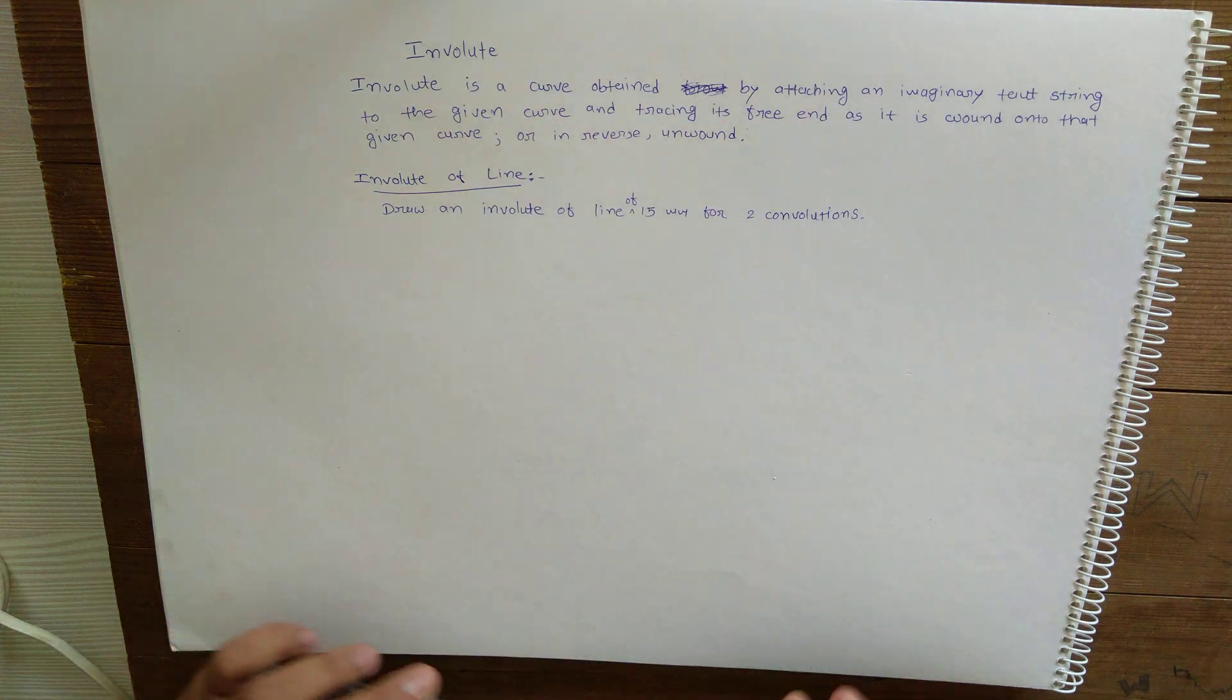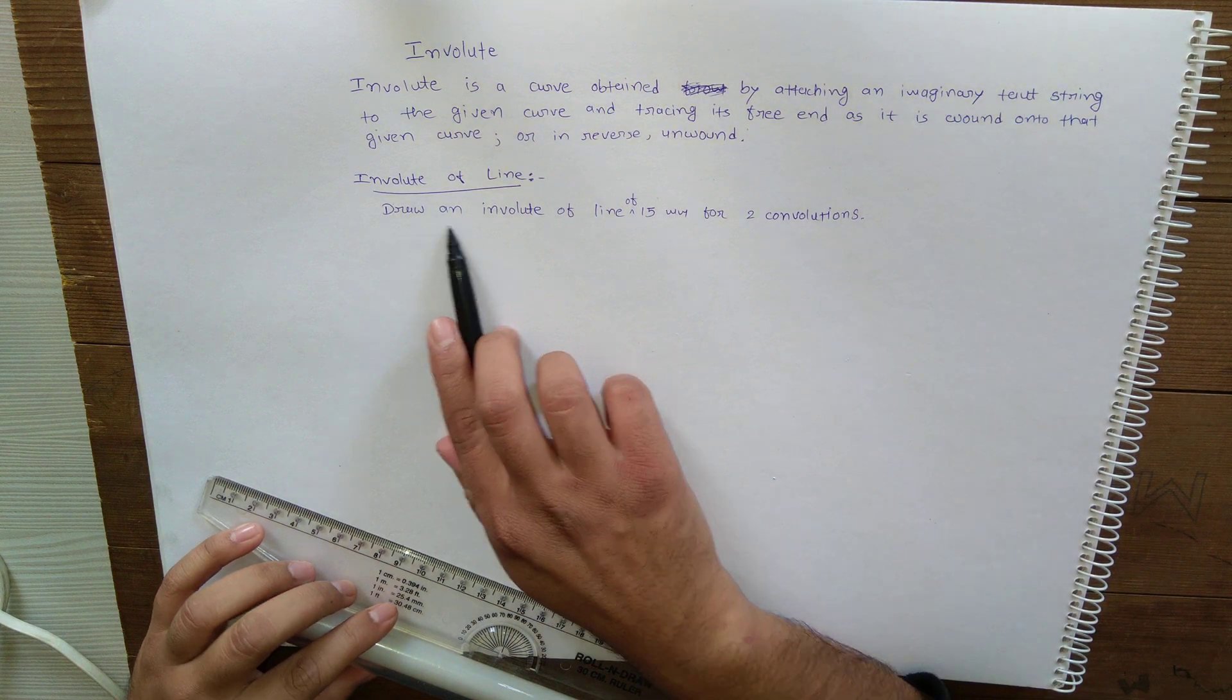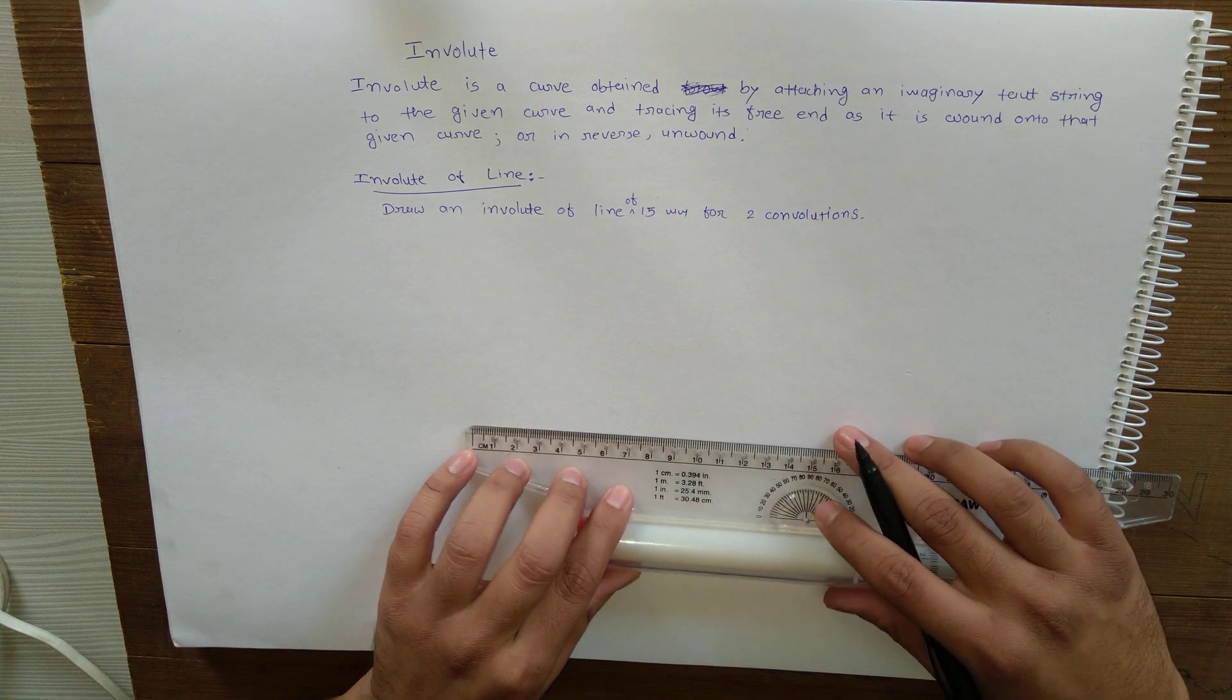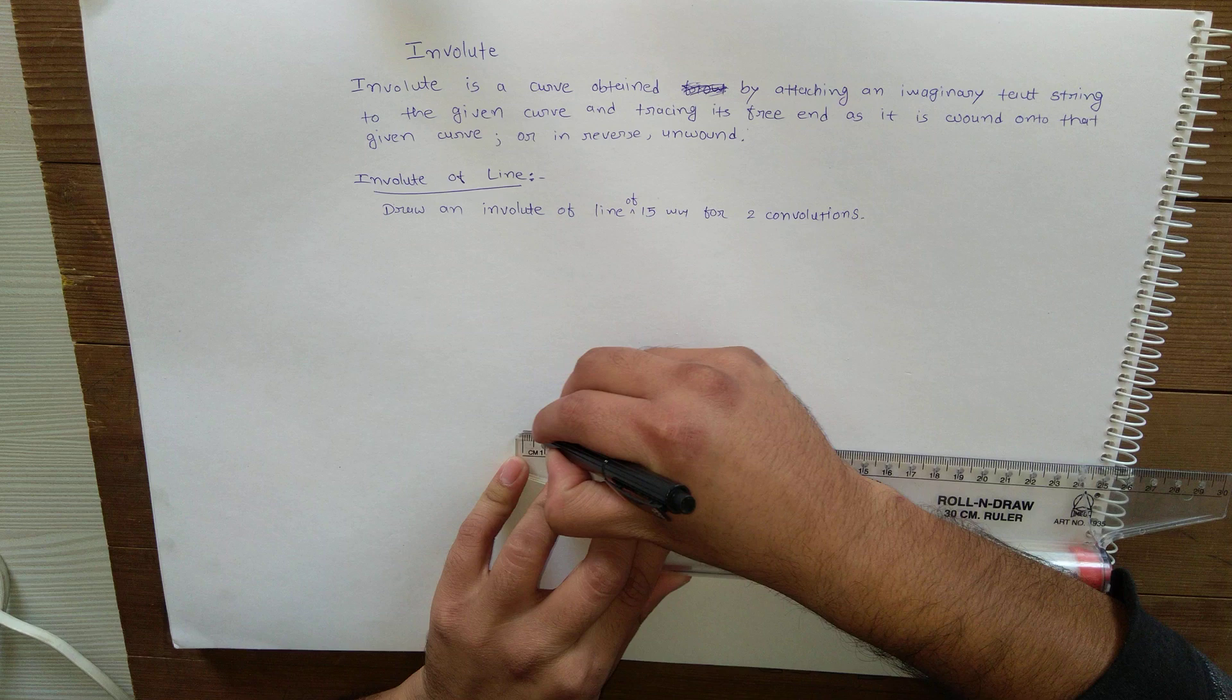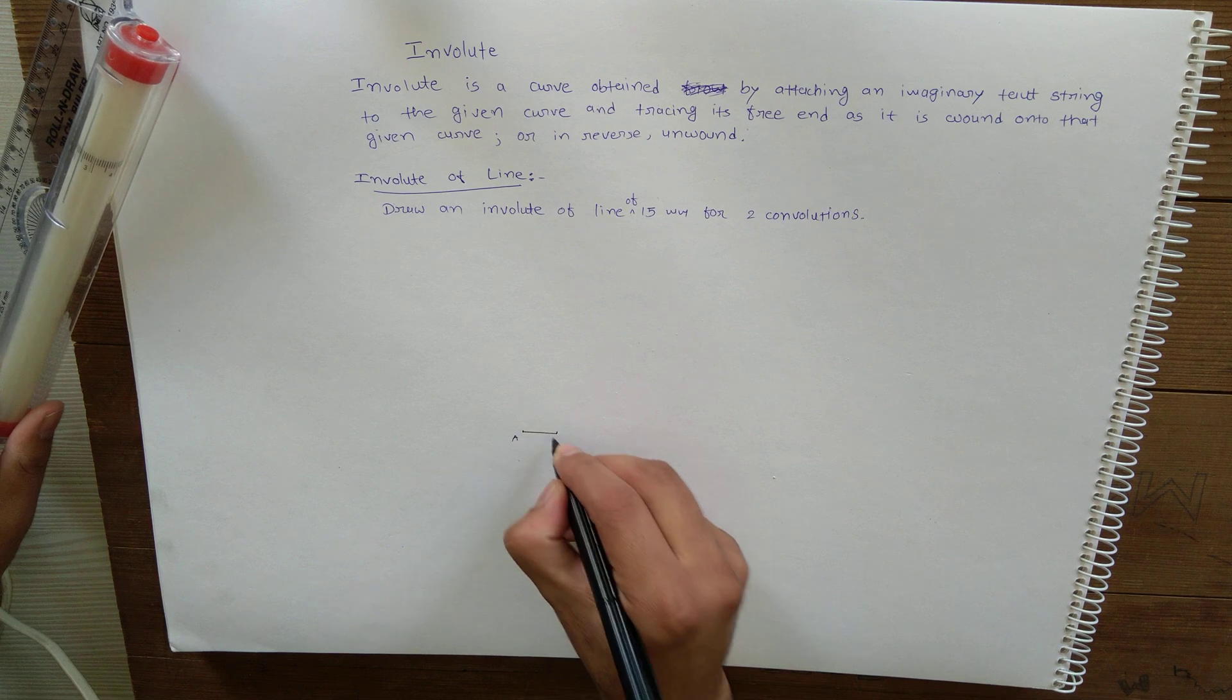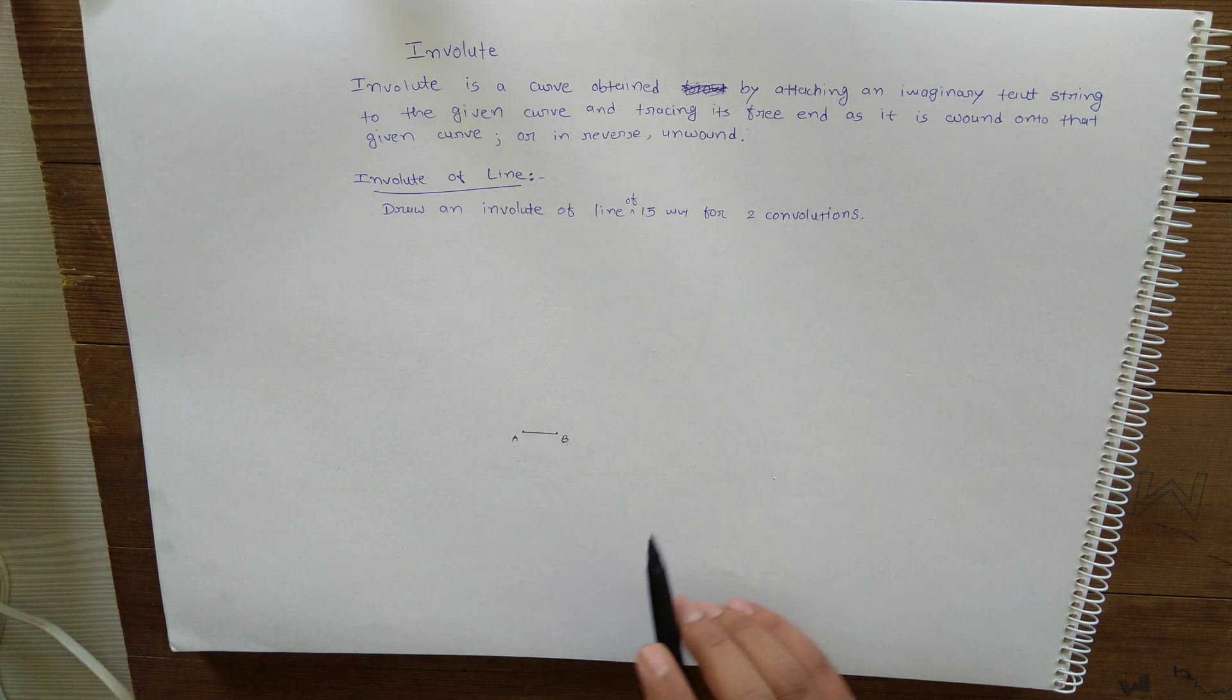Welcome friends. In this video, I am going to explain involute of line. For that, it is given: draw an involute of line of 15 mm for two convolutions. So first, draw a line of 15 mm. Here is the line of 15 mm length, and we need to draw...